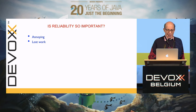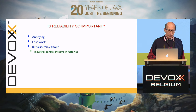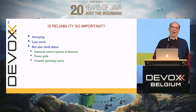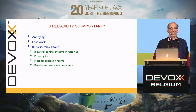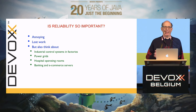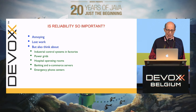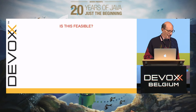Is reliability important? It's annoying when things fail and you may lose work. But think about industrial control systems in factories — if it doesn't work, bad things happen. Electric power grids — very bad things happen. Hospital operating rooms really don't like reboots in the middle of open heart surgery. Banking and e-commerce servers going down for 10 minutes makes the bank and customers unhappy. Emergency phone centers for storms, control software in cars and airplanes — if that doesn't work, bad things happen. So can you make software reliable?